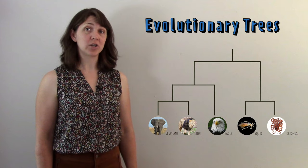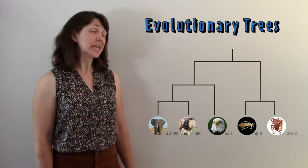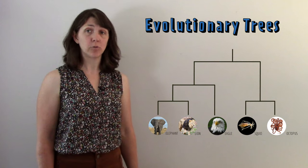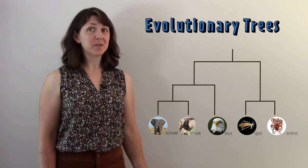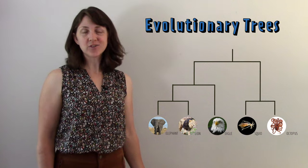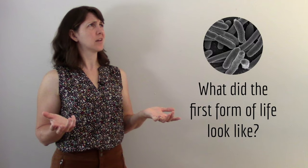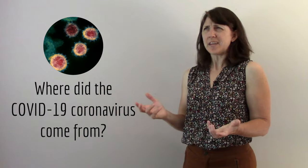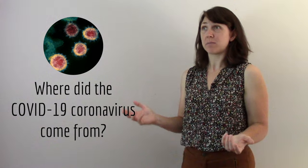Hi there, I'm Jamie Dyer. This video is about evolutionary trees, which are diagrams that depict the relationships between groups of organisms. Evolutionary trees can be used to answer some really interesting questions, like what did the first form of life look like? Where did the COVID-19 coronavirus come from?